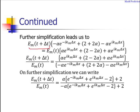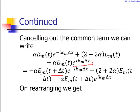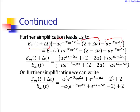Canceling out the common term e^(i k_m x) and taking e_m(t) common on the left-hand side, we can write: e_m(t)[alpha e^(-i k_m Δx) + 2 - 2α + alpha e^(i k_m Δx)] equals e_m(t + Δt)[minus alpha e^(-i k_m Δx) + 2 + 2α minus alpha e^(i k_m Δx)]. Therefore, e_m(t + Δt) divided by e_m(t) equals this ratio.